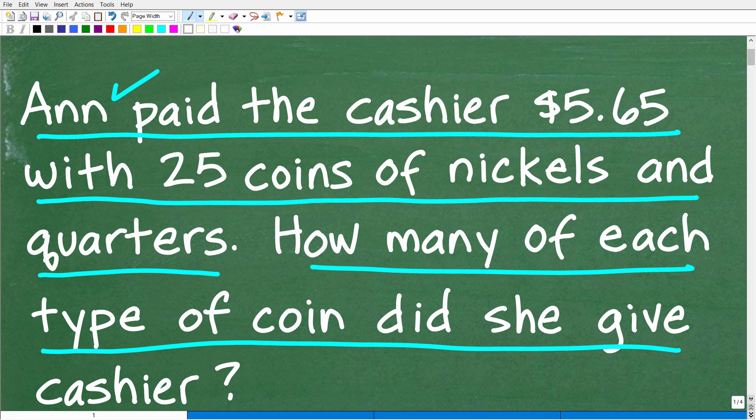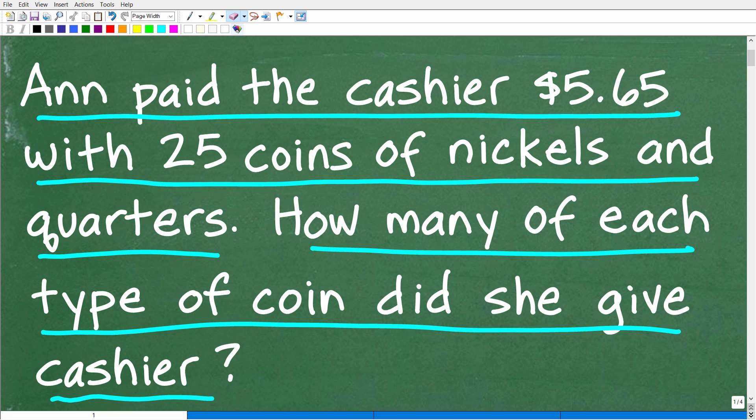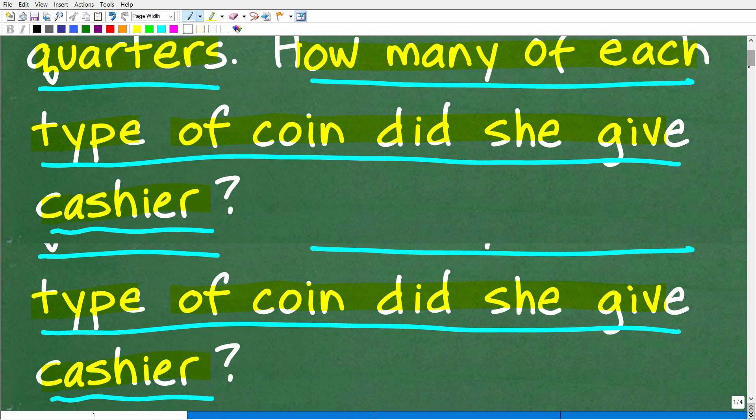All right, now before I show you the answer, let's just take one more look at the question. So Ann paid the cashier $5.65 with 25 coins of nickels and quarters. So the question is, how many of each type—how many nickels and quarters did she give the cashier? All right, so that is the question. Now let's take a look at the answers.